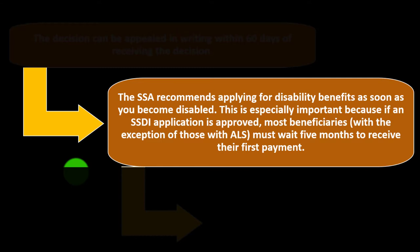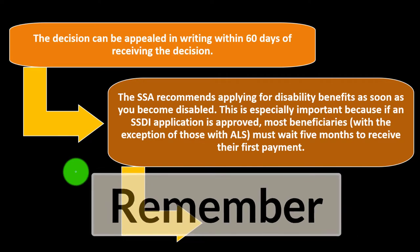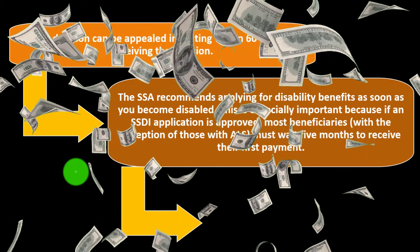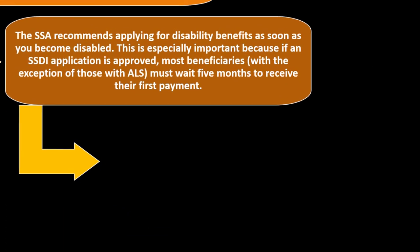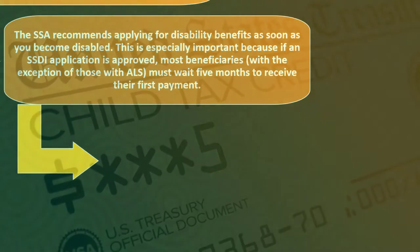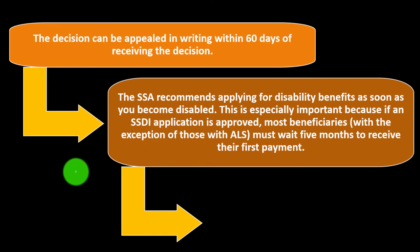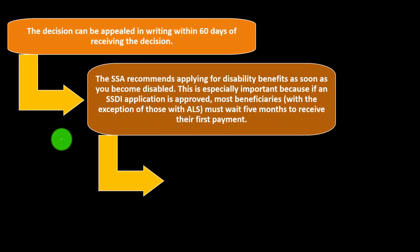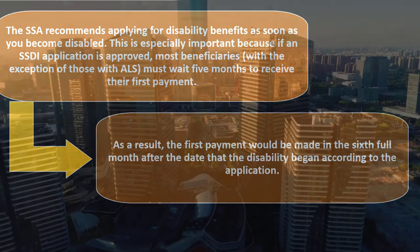The SSA recommends applying for disability benefits as soon as you become disabled. This is especially important because, if approved, most beneficiaries — with the exception of those with ALS — must wait five months to receive their first payment. SSDI is more of a long-term disability program, so it's not designed for immediate month-to-month relief. Workers' compensation and personal savings are better suited for the short term while the SSDI process runs its course.